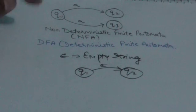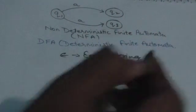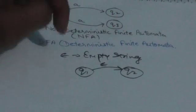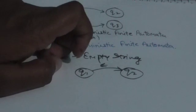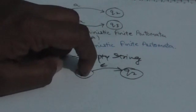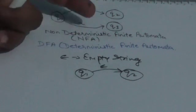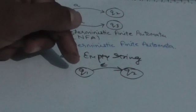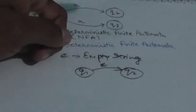If a finite automata has such empty transitions, it is also an NFA. This is because it is not determined whether the machine remains in state q1 or jumps to state q2 — even without applying any input symbol, the machine can jump from state q1 to q2.